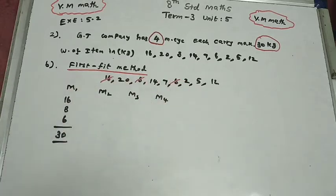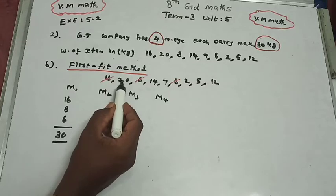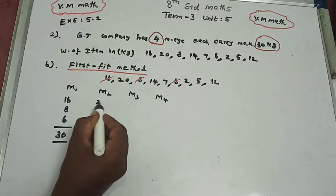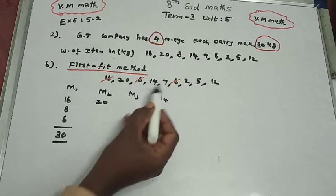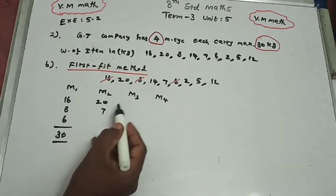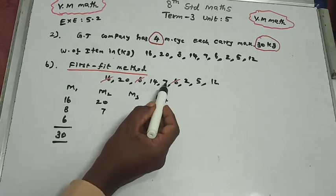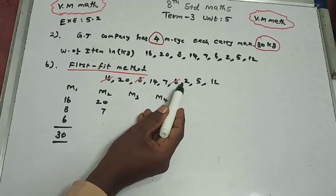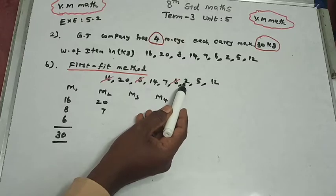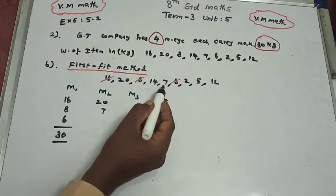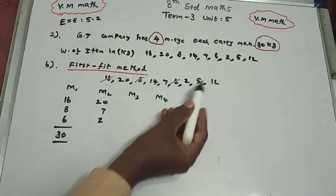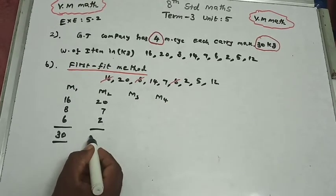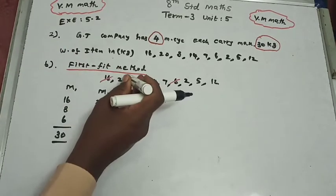For the second motorcycle: start with 20 kg. The first number after 20 — adding 7 gives 27 kg, which is less than 30. So 7 goes into this motorcycle. Total so far is 27 kg for the second motorcycle.